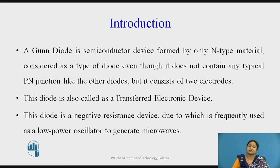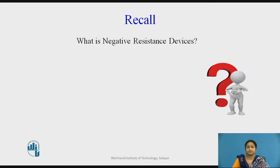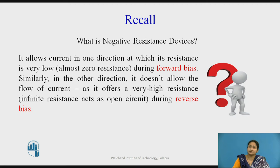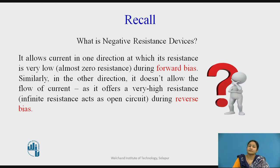These devices are also called negative resistance devices, due to which they are used to generate microwave frequencies at low power, or they may be used as a low power oscillator to generate microwave frequencies. Negative resistance devices allow current in one direction at which their resistance is very low — almost equal to zero — during forward bias. In the other direction, it does not allow the current to flow, as it offers high resistance during reverse bias.